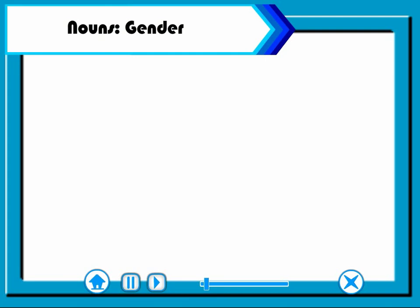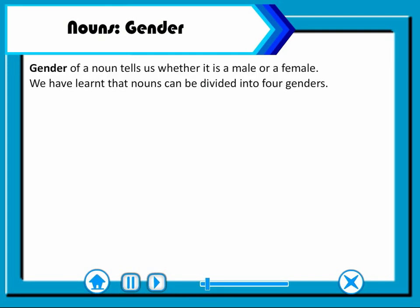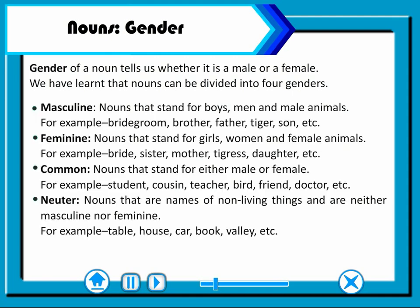Nouns. Gender. The gender of a noun tells us whether it is male or female. We have learned that nouns can be divided into four genders.